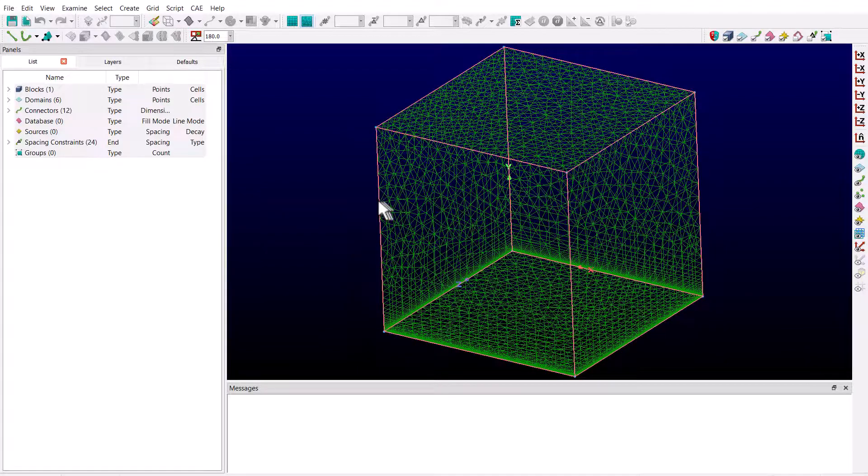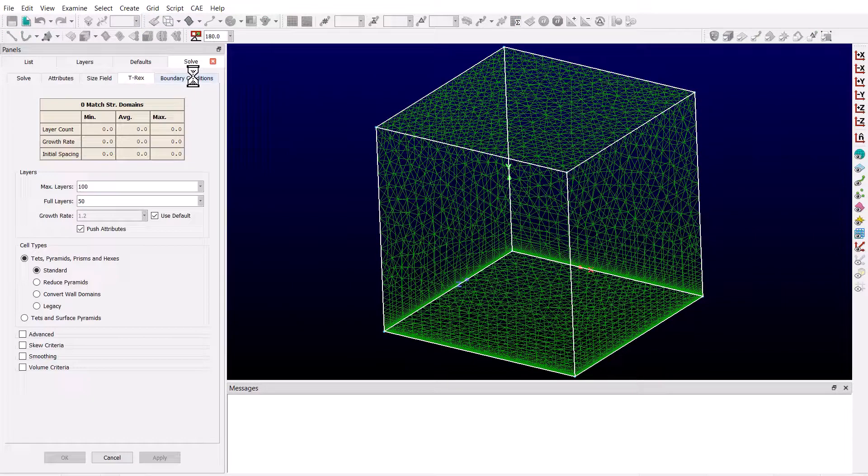Let's select this block and choose Grid T-Rex from the menu. I've already defined the T-Rex boundary conditions and set the max and full layers to 150 layers.